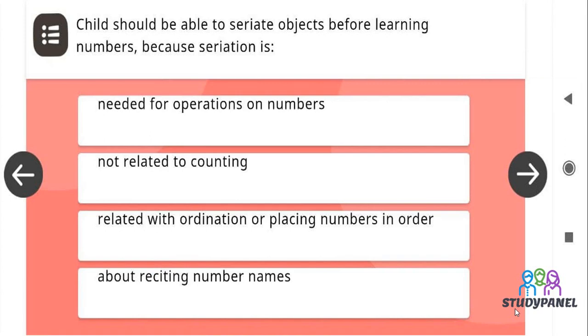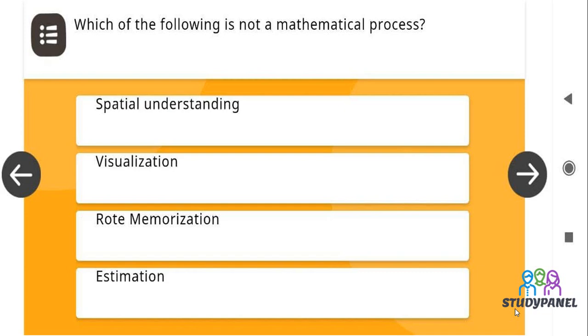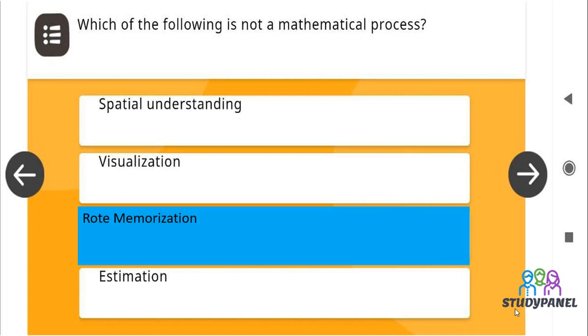Child should be able to seriate objects before learning numbers because seriation is related with ordination or placing numbers in order. Which of the following is not a mathematical process? The correct answer is rote memorization.